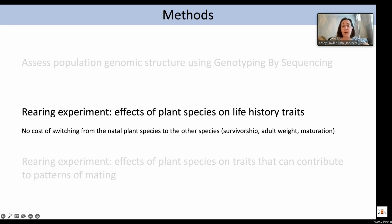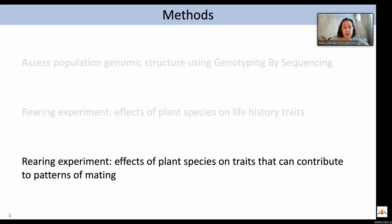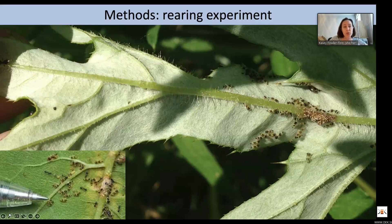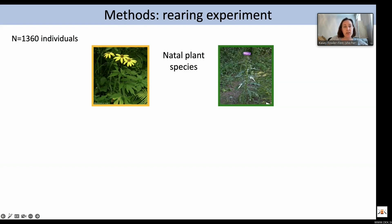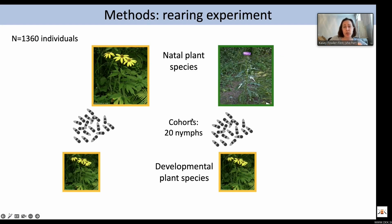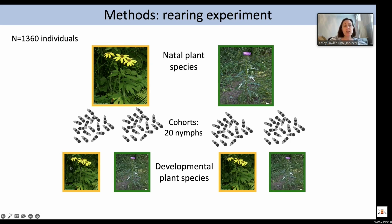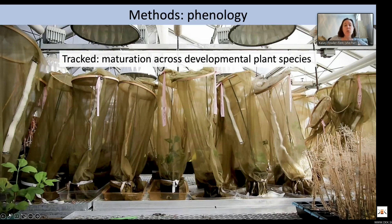We then did a large rearing experiment looking at the effects of plant species on traits that can contribute to patterns of mating. We collected individuals in the field as first and second instar nymphs — females lay their eggs in the ribs of the plant. We had almost 1,400 individuals taken from their natal plant species, focusing on two plants: coneflower and thistle. We took cohorts of 20 nymphs and placed them on the developmental plant species, so half of coneflower individuals were placed on coneflower and half on thistle, repeated for thistle-born individuals. We reared them in the greenhouse and tracked maturation to test for phenology.